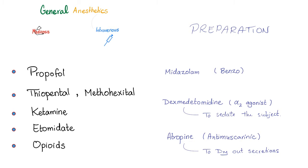Intravenous general anesthetics include propofol, thiopental, methohexital — if they end in -tal, they are barbiturates. Also ketamine, etomidate, and opiates. Before giving these, you should premedicate the patient. You can give midazolam — a benzodiazepine to calm the patient down. You can give dexmedetomidine, which is an alpha-2 agonist and therefore anti-sympathetic — no fight-or-flight, just calm. You can also give atropine to dry out secretions, and use suction, similar to what dentists do.